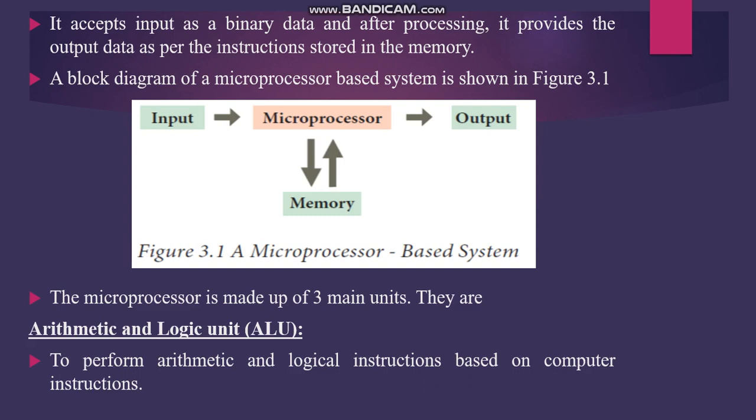Using a clock, we can understand the block diagram of a microprocessor. The block diagram shows: Input → Microprocessor → Output. The microprocessor also connects to memory using a double-arrow, indicating bidirectional data flow.